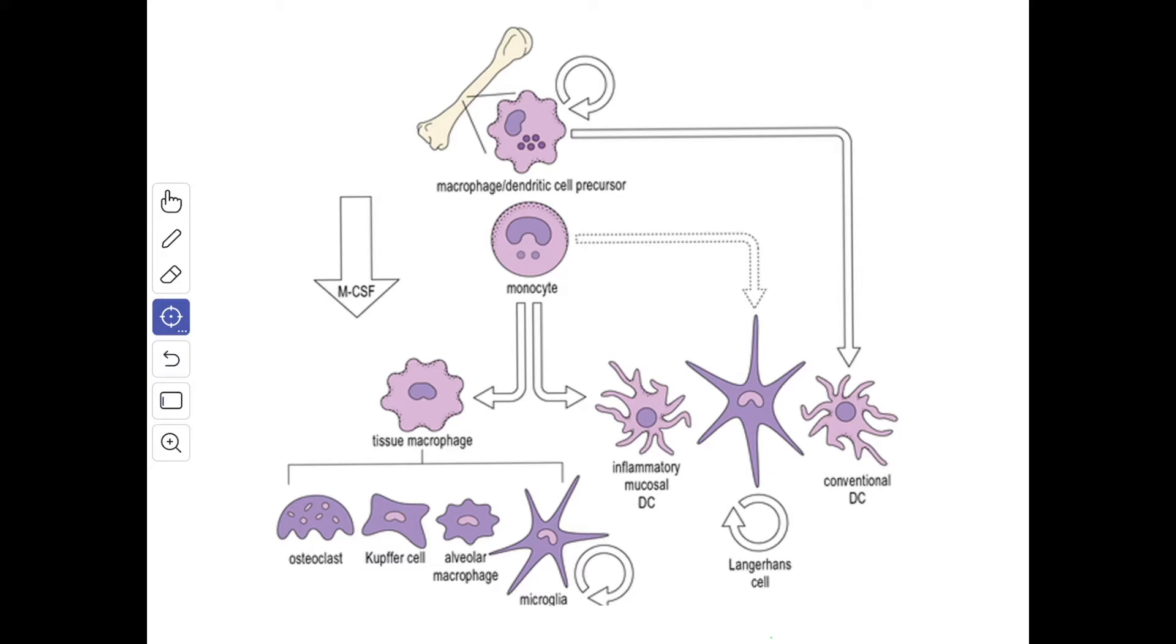Previously, some of these cells were included under the term reticulo endothelial cells but now this term is discarded as most of the endothelial cells do not act as macrophages. Now the term is changed as mononuclear phagocyte system or monocyte phagocyte system.